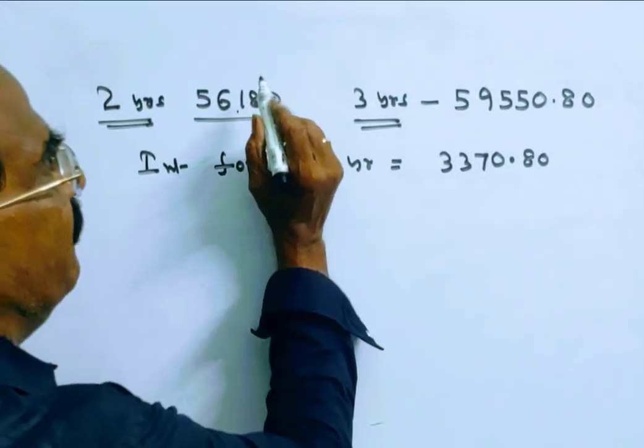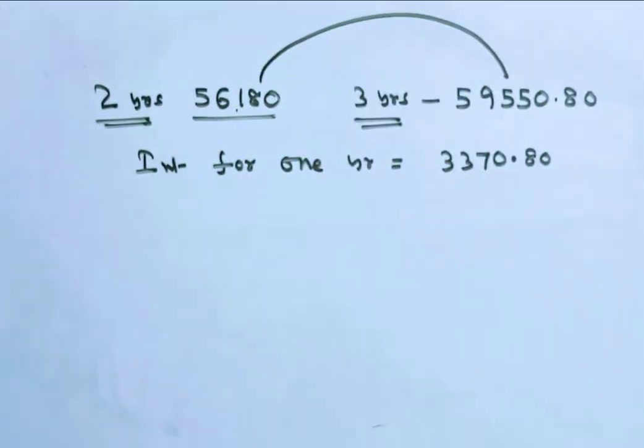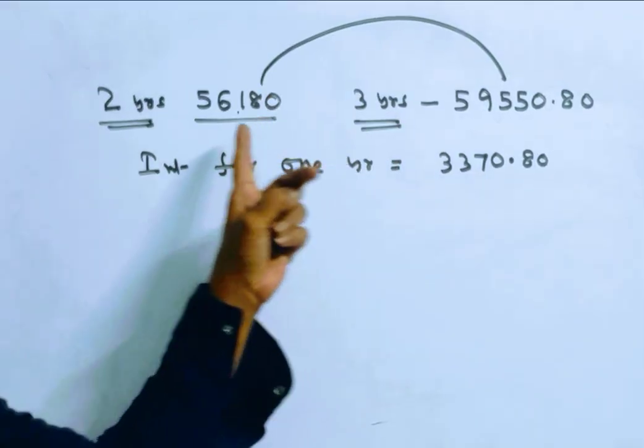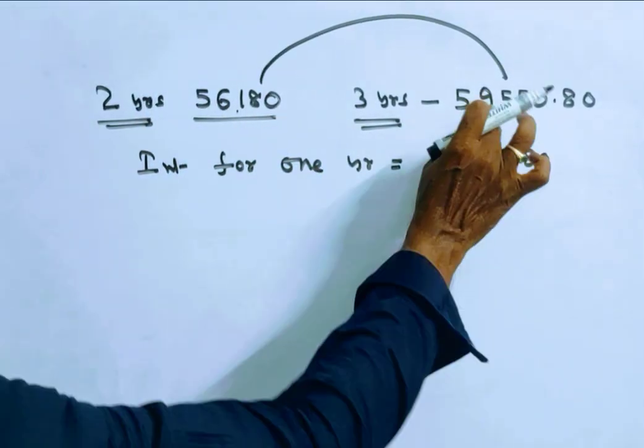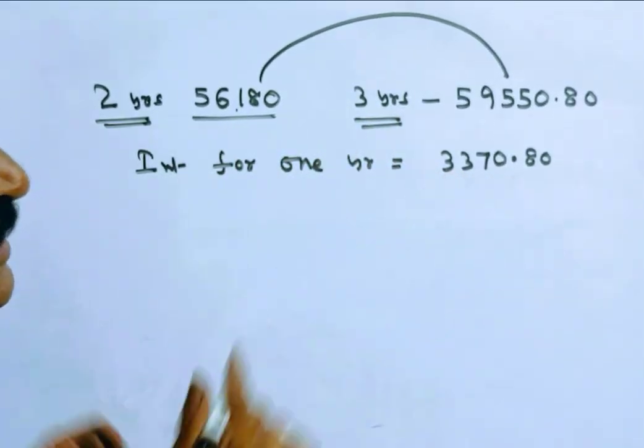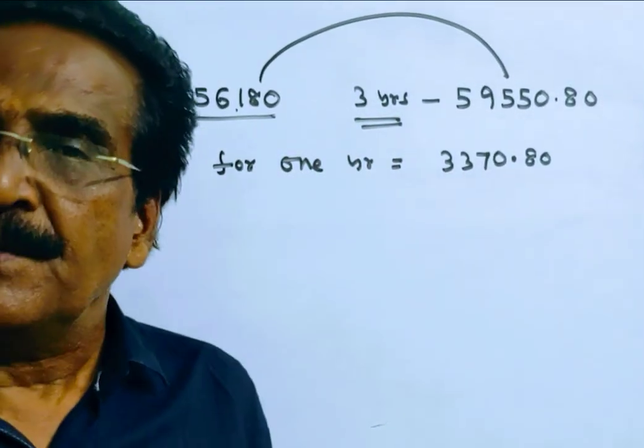So, in 1 year the interest earned on 56,180 is this minus this, that is 3,370.80.